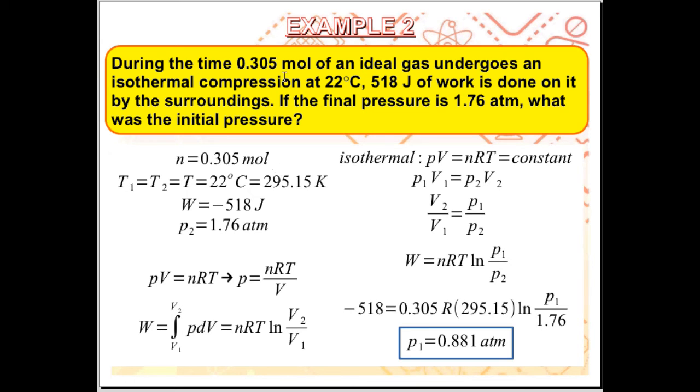0.305 mol of the ideal gas, that means n is equal to 0.305 mol. The temperature is constant, isothermal, constant at 22 degrees. T1 is equal to T2 is equal to T is equal to 22 degrees Celsius. Let's convert that to Kelvin, which gives us 295.15 Kelvin.